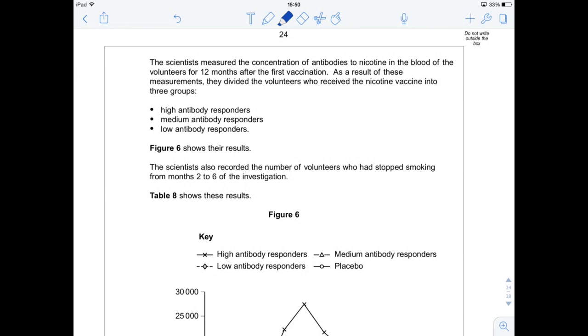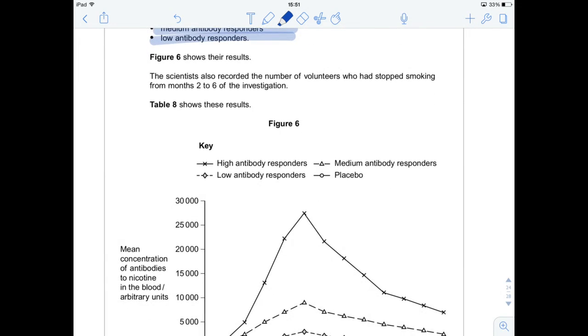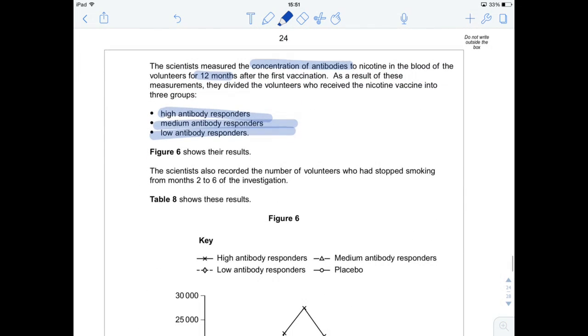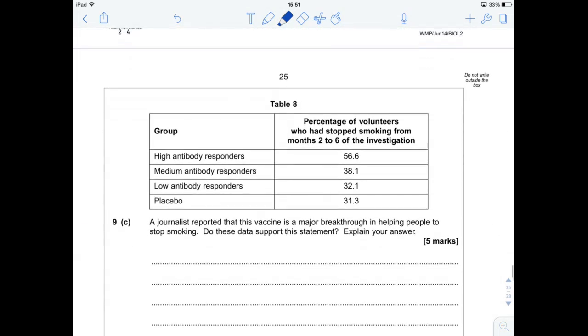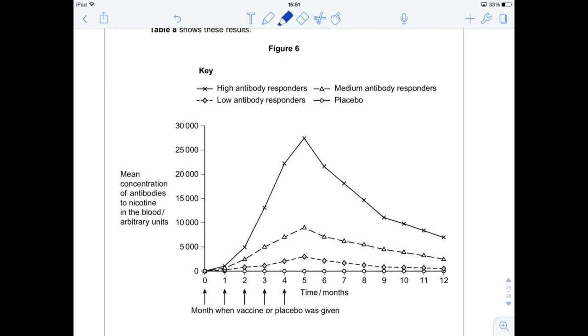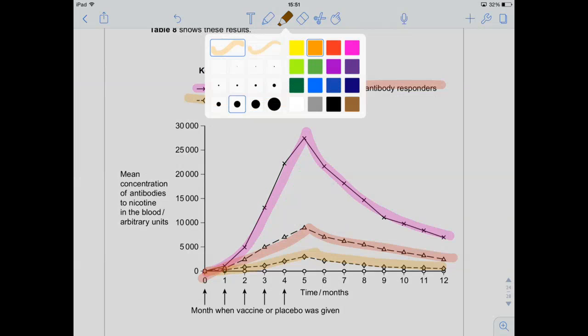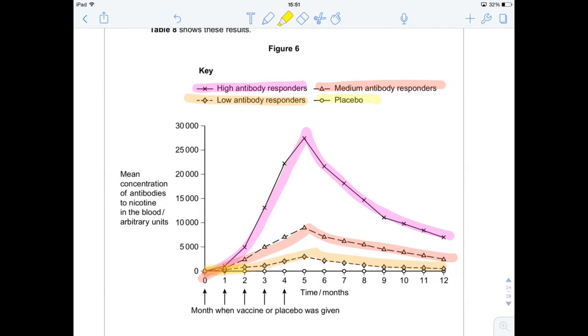So, let's have a look. More science now. Scientists measured the concentration of antibodies to nicotine in the blood of volunteers for 12 months after the first vaccination. As a result of these measurements, they divided the volunteers into three groups. High responders, medium responders, low responders. And figure six shows their results. That's this mighty looking graph right here. The scientists also recorded the number of volunteers who had stopped smoking from months two to six of the investigation. And that's in table eight, which is down here. So, let's have a little look-see. So, let's do this all pretty and nice. So, our high antibody responders, they peak and then they drop. They don't drop too low. Our medium antibody responders, they peak and then they go down steadily. Our low antibody responders, they go up and they come down. And our control group, well, they do nothing.